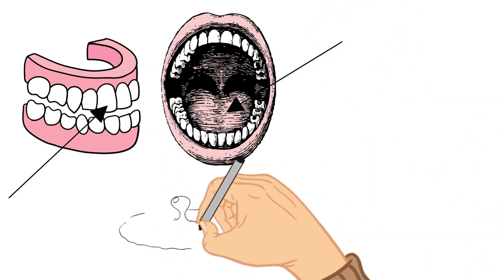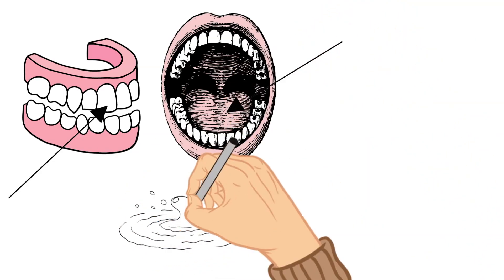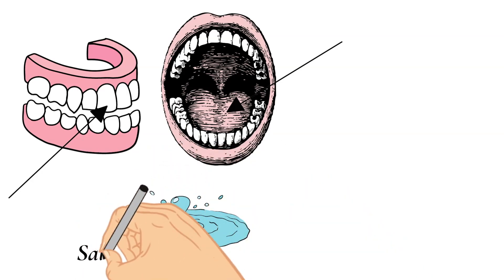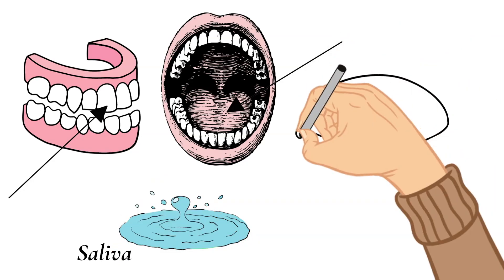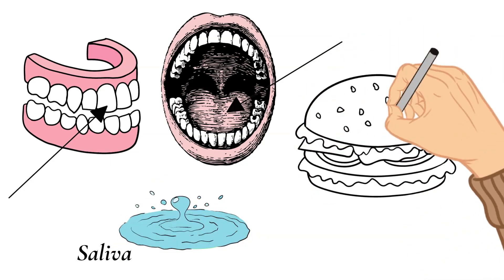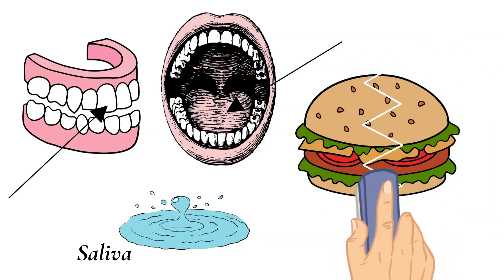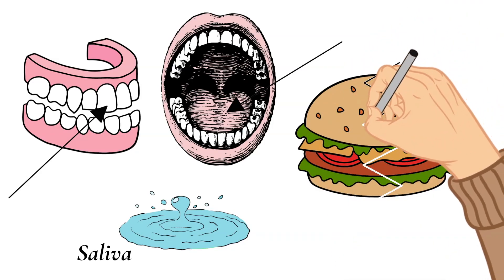This process begins to form saliva in your mouth. Saliva has chemicals in it that start the process of breaking down the food slightly even before it gets to your stomach. It also serves the purpose of making your food mushy and wet, which is going to make it easier to swallow.